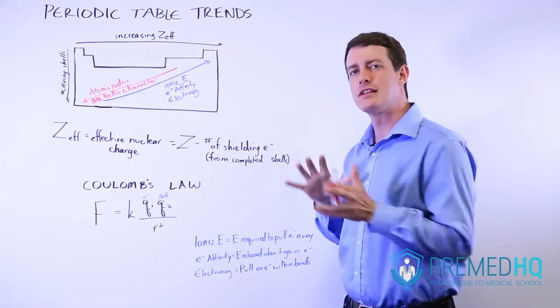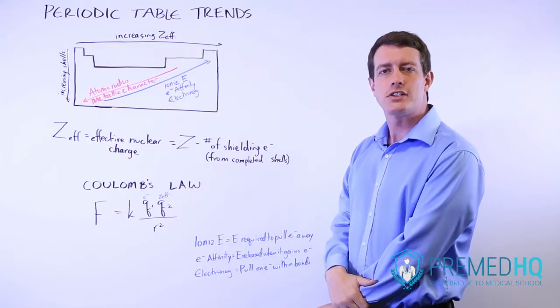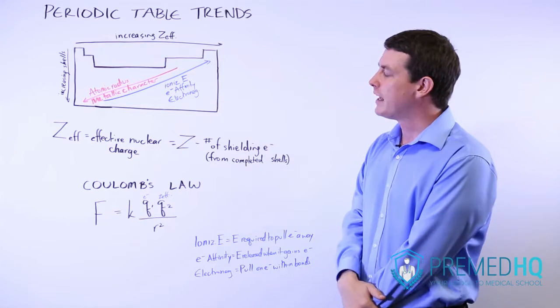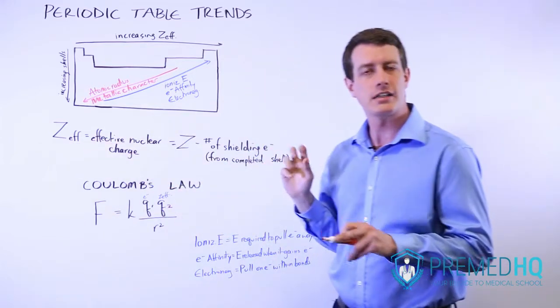But because chemistry is taught in the same section as physics for the MCAT, it might be useful to understand why this happens. And in order to do that, we have to introduce something called Z effective or the effective nuclear charge.